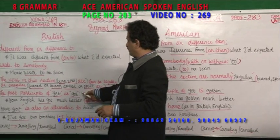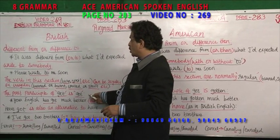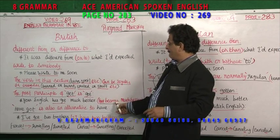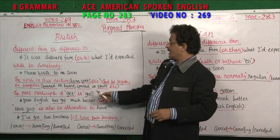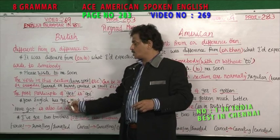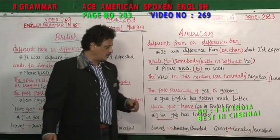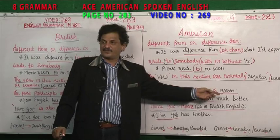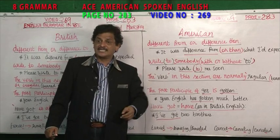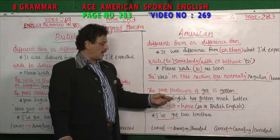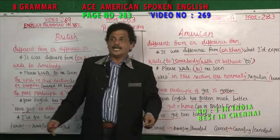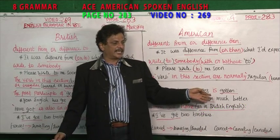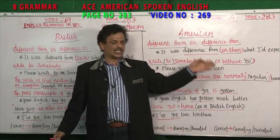The past participle of "get" is "got" in British English: "Your English has got much better" — get, got, got. But in American English, the past participle is "gotten": "Your English has gotten much better" — get, got, gotten.